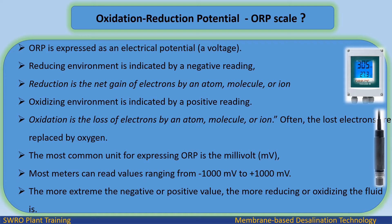Often the lost electrons are replaced by oxygen. The most common unit for expressing ORP is the millivolt, mV. Most meters can read values ranging from minus 1000 millivolt to plus 1000 millivolt. The more extreme the negative or positive value, the more reducing or oxidizing the fluid is.